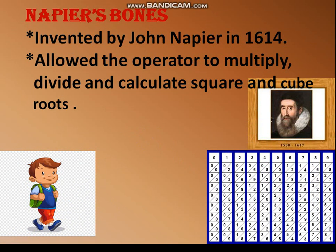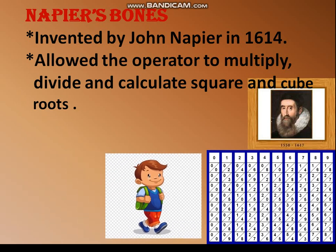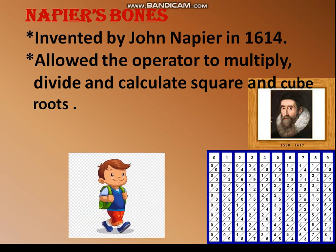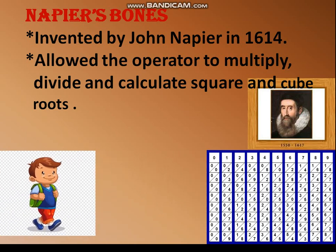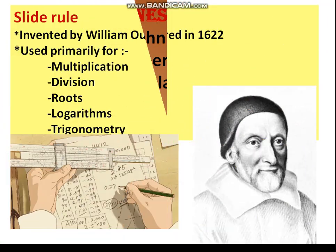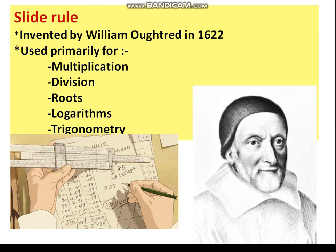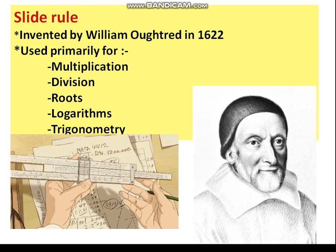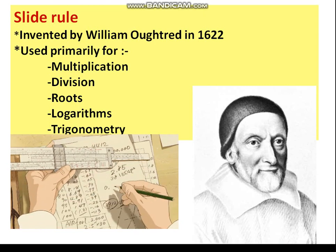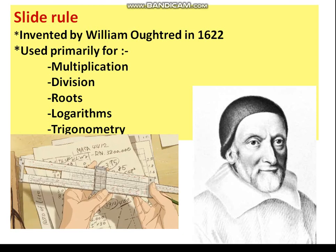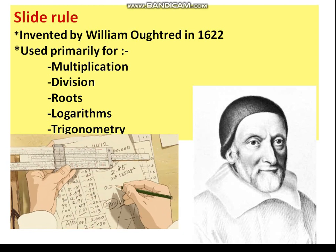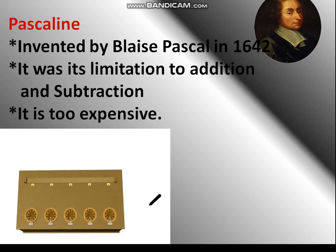Napier Bones, invented by John Napier in 1614, allow the operator to multiply, divide, and calculate square and cube roots. The slide rule, invented by William Oughtred in 1622, was used primarily for multiplication, division, roots, and logarithms.